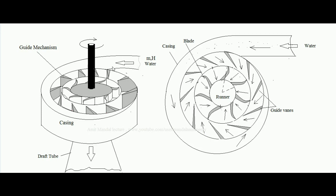Regarding the flow direction of a Francis turbine: initially the flow is radially inward — water moves toward the center in the radial direction. After passing through the runner, water collects at the center and then moves in the axial direction. So initially water moves radially and ultimately axially, which is why the Francis turbine is also called a mixed flow machine.